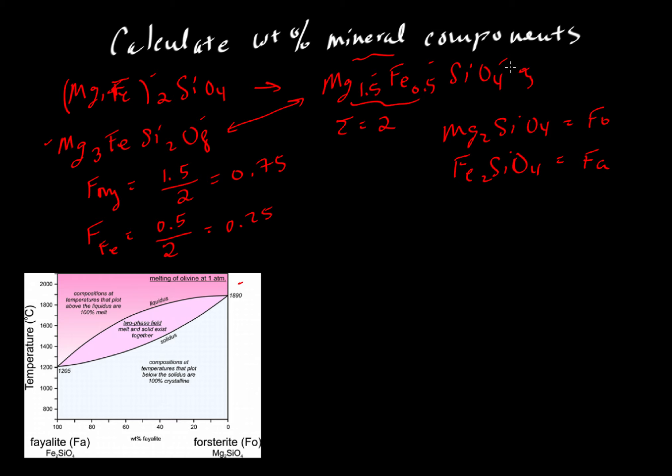We're being consistent by writing these all on a 4-oxygen basis. We could say this is 75% forsterite and 25% fayalite. We have something that is, on a molecular basis, 25% fayalite and 75% forsterite.